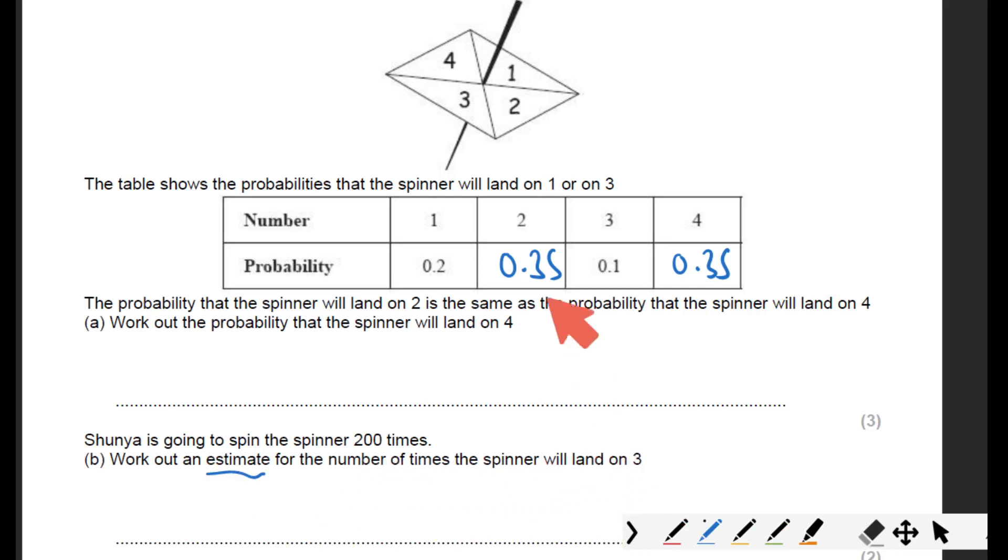Work out the estimate for the number of times the spinner will land on three, which is this one here. The probability of landing on a three is 0.1, only one in ten chance. Spun 200 times, so you do 0.1 times 200, that will give you 20.